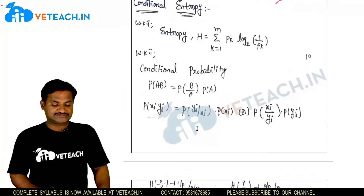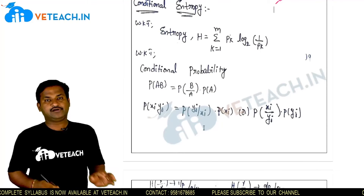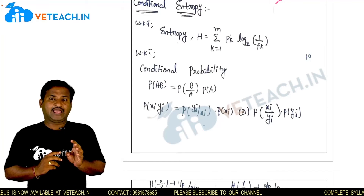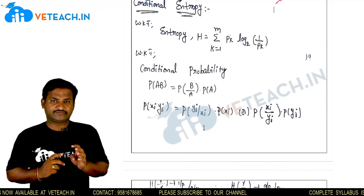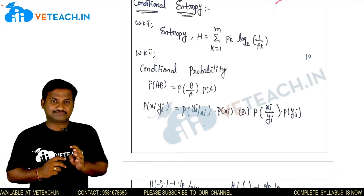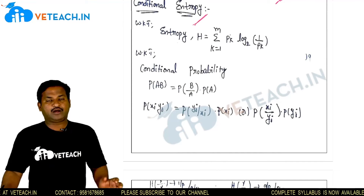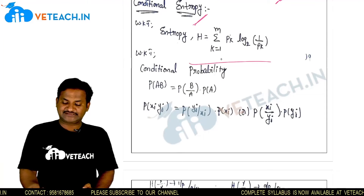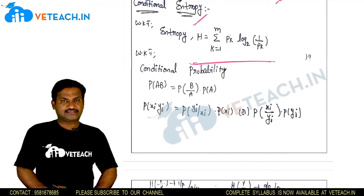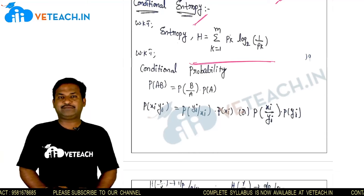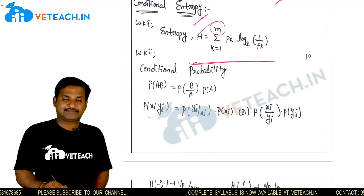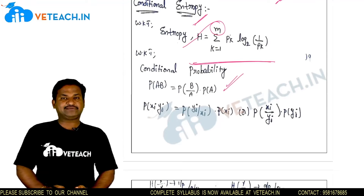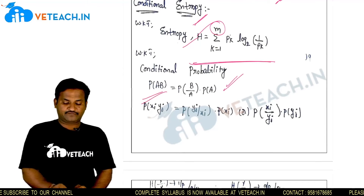Now the next concept: conditional entropy. The measure of information is nothing but entropy — the average measure of information — calculated with H. Entropy can be represented as H = Σ pk · log(1/pk), base 2, where k goes from 1 to m.